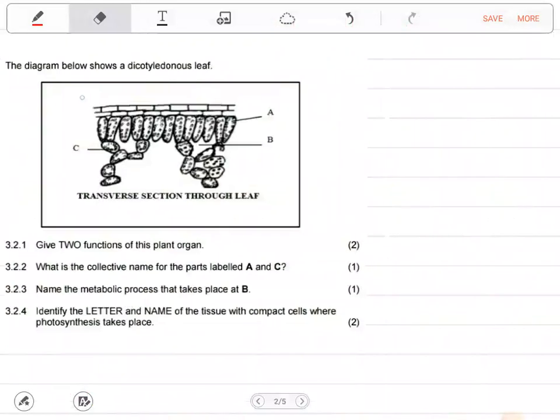The next question says the diagram below shows a dicotyledonous leaf. This is a transverse section through the leaf. Give two functions of this plant organ. The plant organ they're talking about is the leaf itself.